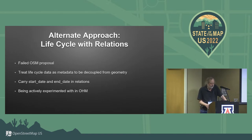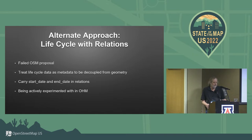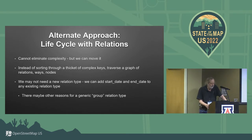Another approach is lifecycle using relations — a failed OSM proposal. The basic concept is to treat lifecycle data as metadata which can be decoupled from geometry. You put tags on the relation to describe the lifecycle data, and just use nodes and ways to describe geometry and any keys that don't change with the lifecycle. You carry start date and end date in relations. I'm actively experimenting with this, and even though it was a failed OSM proposal, it's very viable for OHM. The basic idea: we cannot eliminate complexity, but we can move it.